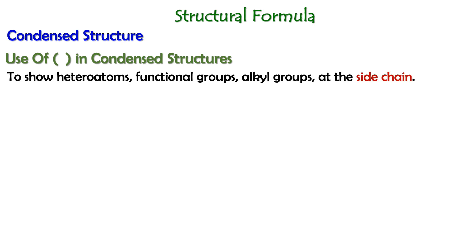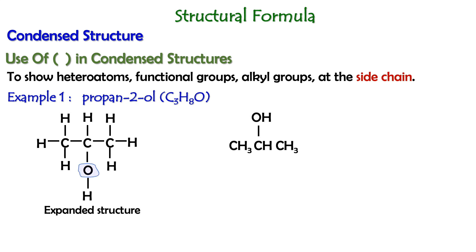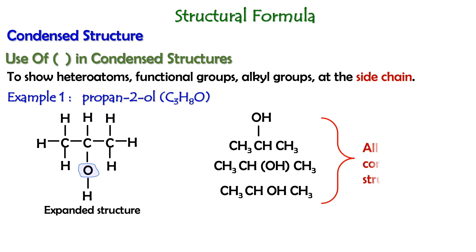Brackets can be used in condensed structure in order to show hetero atoms, functional groups, or alkyl groups at the side chain. For example, if we have propan-2-ol, this is the expanded structure of the molecule. If we convert it into a condensed structure, we can write the molecule like this, or like this with the bracket around the OH group, or like this. All of these represent the condensed structure of the molecule.